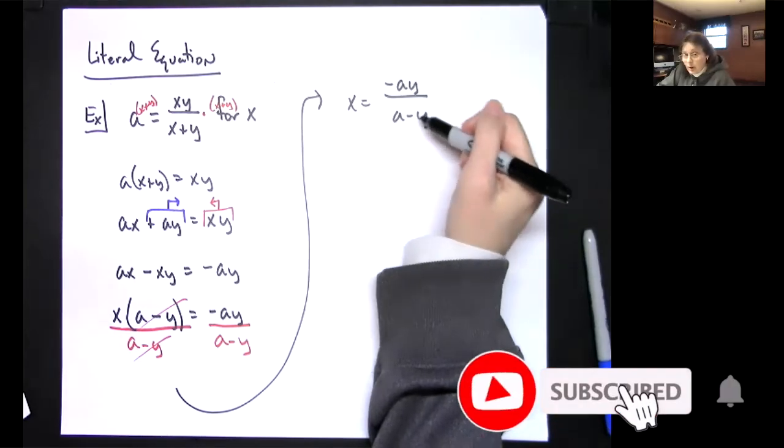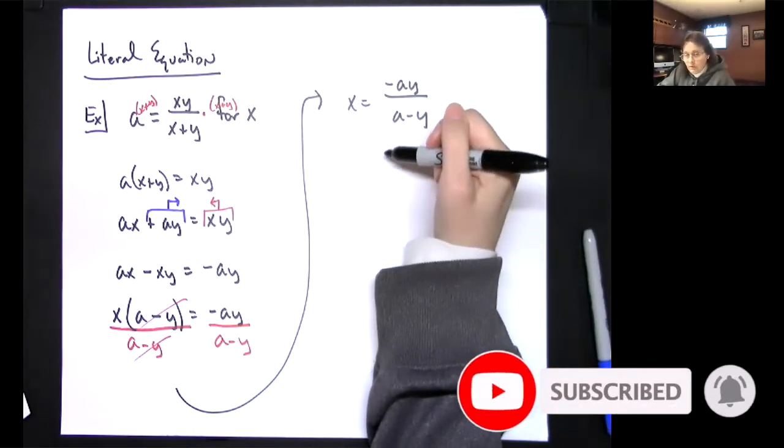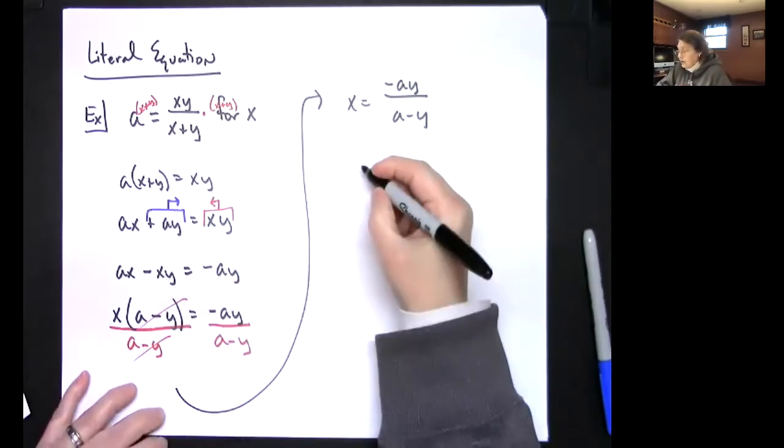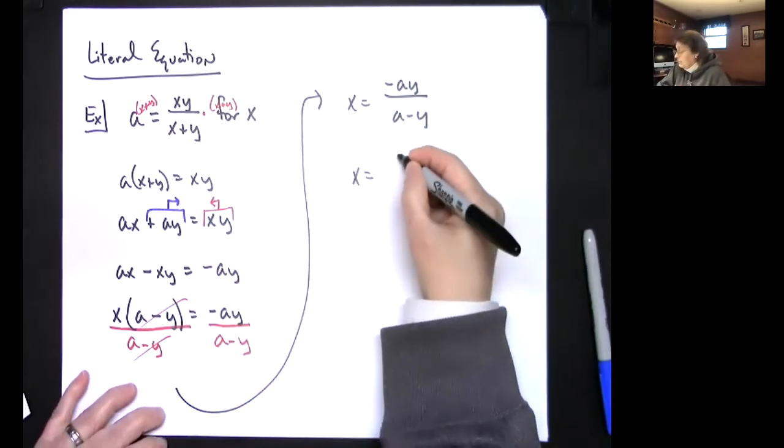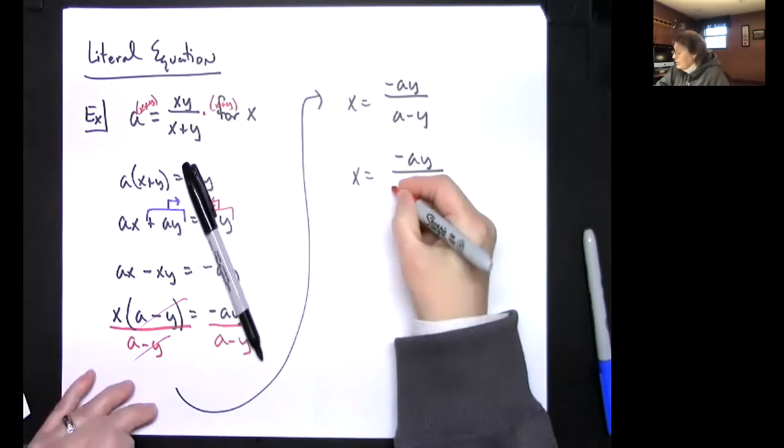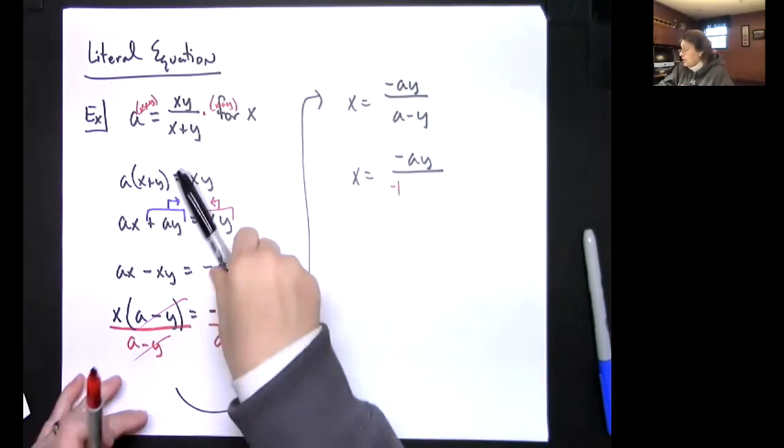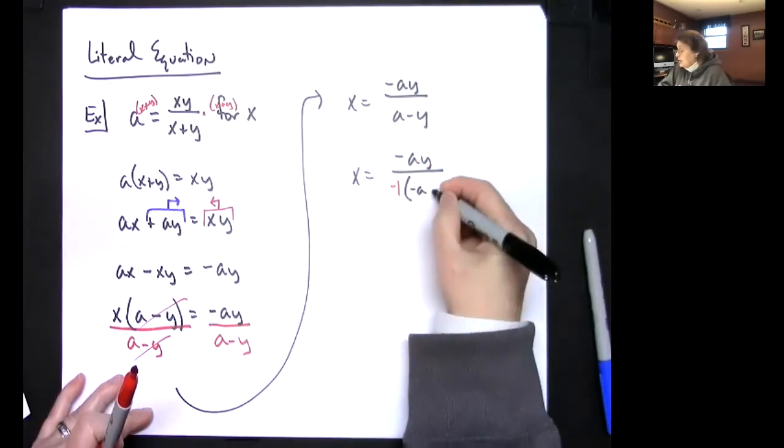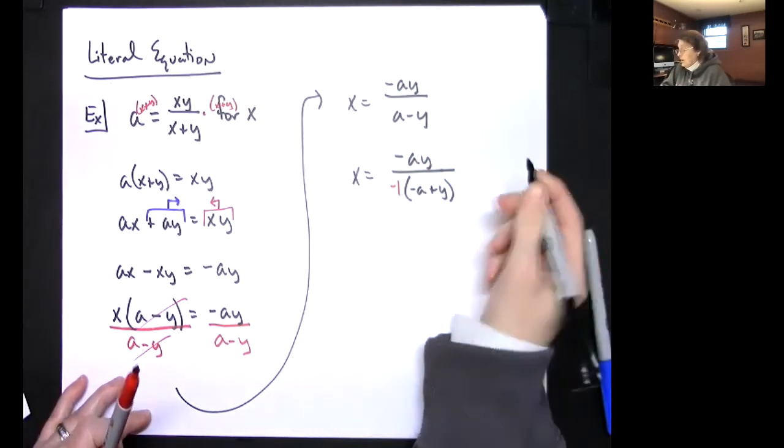So I think the easiest way to look at this is going to be factor out a negative on the bottom. Let's do it this way. Factor out a negative one on the bottom. What's that going to do? That's going to make the a negative. That's going to make the y positive, and I know that looks yucky right now.